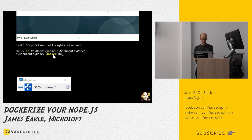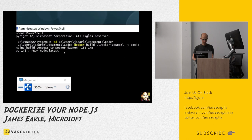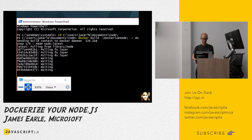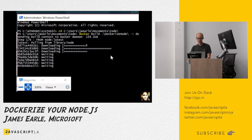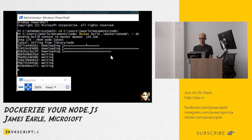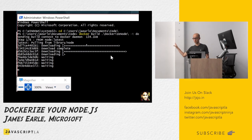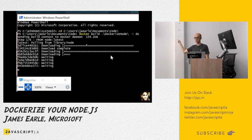Let's try 'docker build dockerize-node' and tag it as 'dockerize-node'. Here we go. 'Pulling from library/node' — hey, it worked! When you say 'pulling from library/node', this is pulling the dependencies specified in our Dockerfile from Docker Hub. When I say 'docker pull node', by default it takes the latest version of node from Docker Hub.